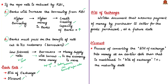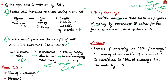A bill of exchange is a written document that assures payment of money by a purchaser to a seller for goods purchased at a future date — for example, a CCTV camera purchased for business purposes, with payment promised at a future maturity date. Discount implies the process of converting the bill into money at an earlier date than the maturity date mentioned in the bill of exchange. Discounting is done when the receiver of the bill needs money urgently.